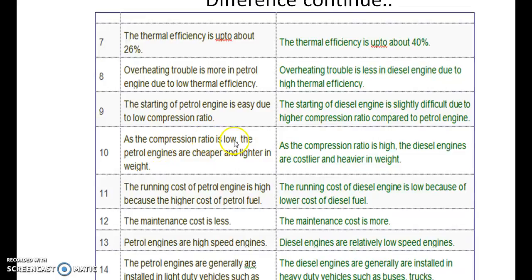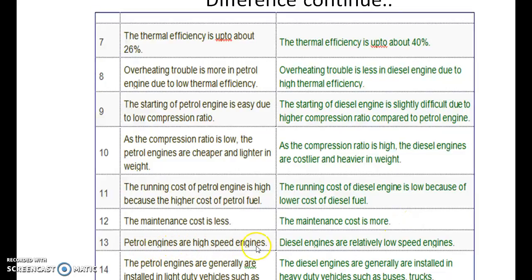As the compression ratio is low, petrol engines are cheaper and lighter in weight. As the compression ratio is high, diesel engines are costlier and heavier in weight. The maintenance cost is low for petrol engines and more for diesel engines. Petrol engines are high speed engines, while diesel engines are relatively low speed engines.